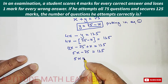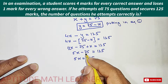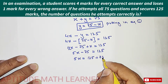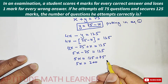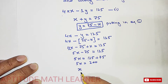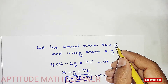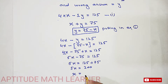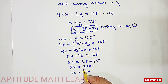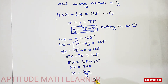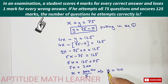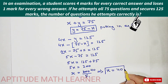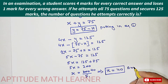So 5X equals 125 plus 75, which is 200. Now X equals 200 divided by 5, which gives us 40. X is the number of correct answers, so the number of correct answers is 40. This is our final answer.